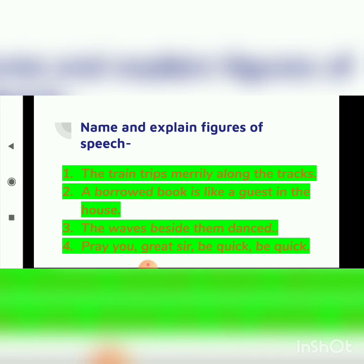Quiz question three: 'The waves beside them danced.' The answer is personification, because waves are given the human quality of dancing. Quiz question four: 'Pray you great sir, be quick, be quick.' The answer is repetition, because the words 'be quick' are repeated for effect.